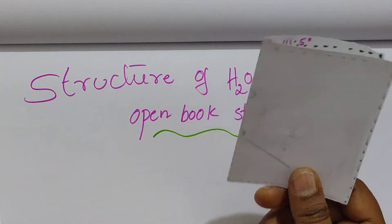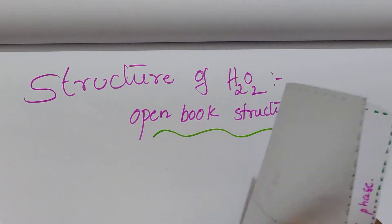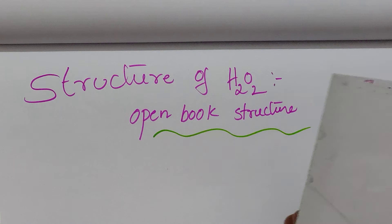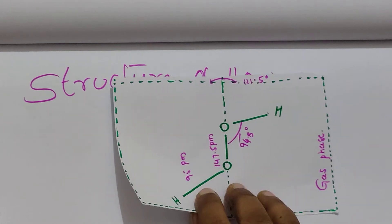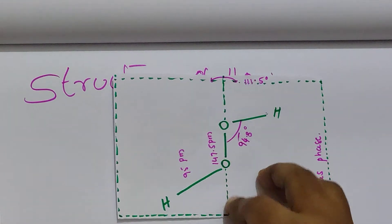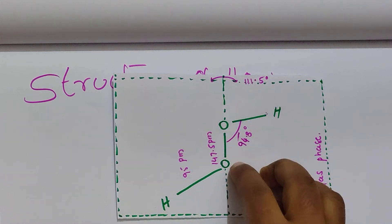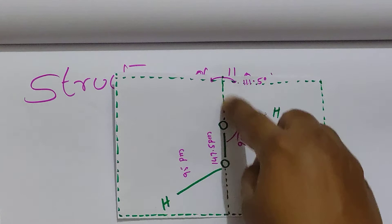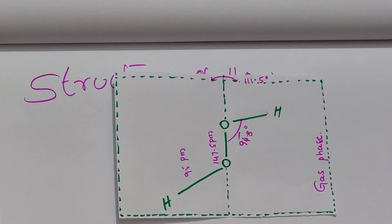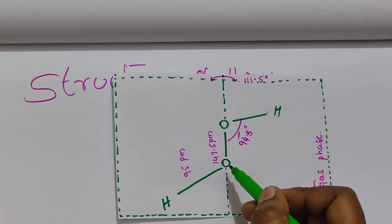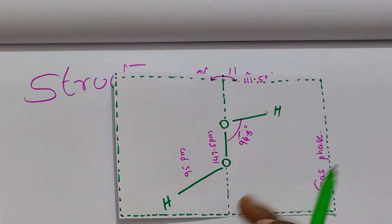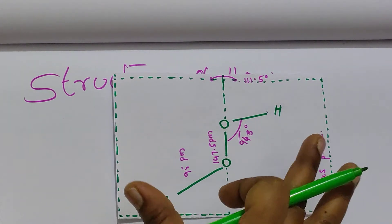We assume this is like a book. How it is an open book structure — we open the book like this. In this book, the middle portion occupies oxygen. The peroxyl linkage is present in the middle portion. The O-O link is called the peroxyl link. Each oxygen is attached to hydrogen, and these are opposite to the two phases.